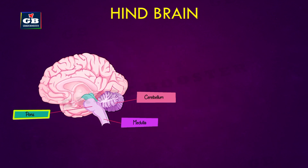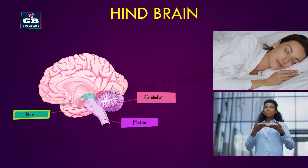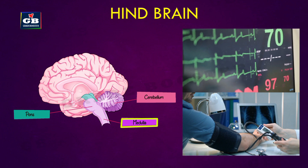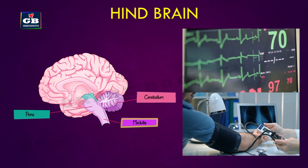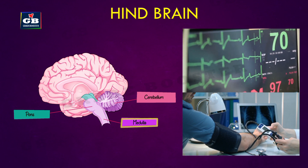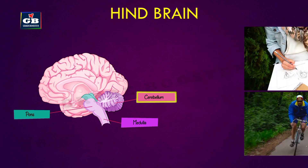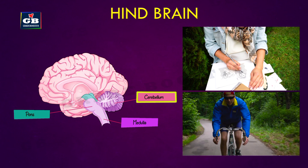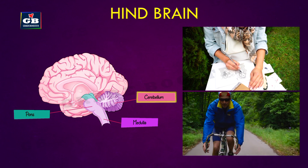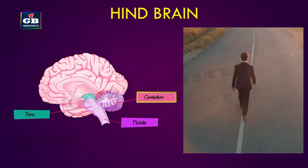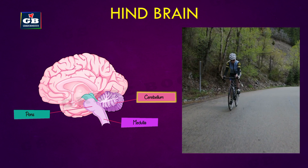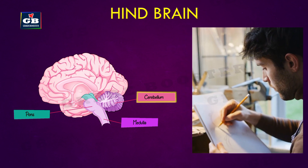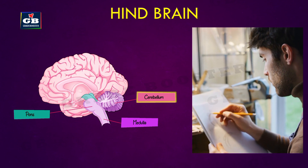The hindbrain has three parts: pons, medulla oblongata, and cerebellum. Pons controls our sleep and wake cycle and breathing. The medulla controls heart rate, breathing, blood pressure, and more involuntary functions. The cerebellum is responsible for precision of voluntary actions and maintaining posture and balance — walking in a straight line, riding a bicycle, and drawing are all possible because of the cerebellum.